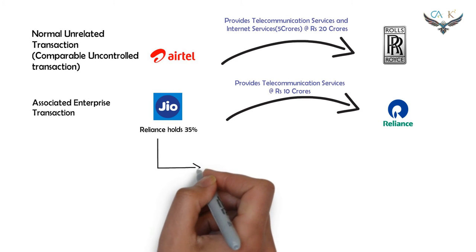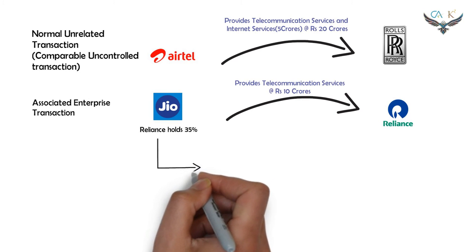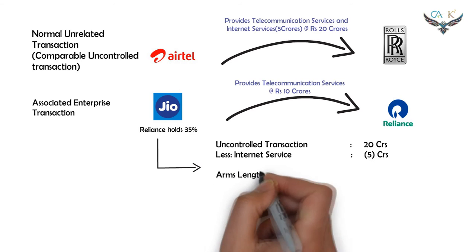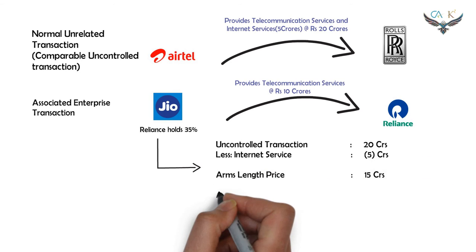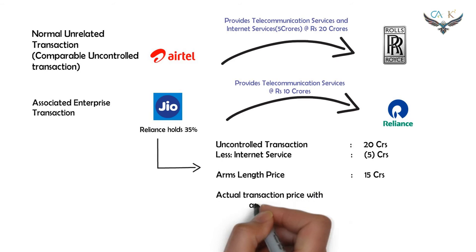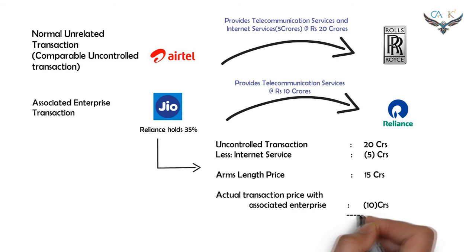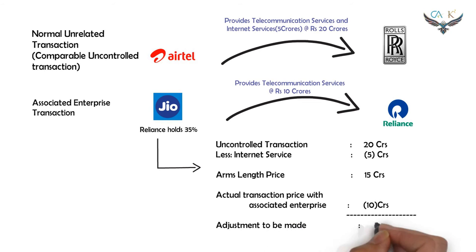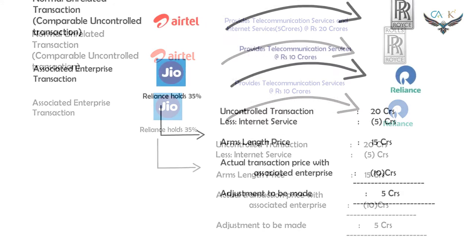In this scenario, the arm's length price is calculated from the perspective of Jio company as follows: take the uncontrolled transaction price of Rs. 20 crores and deduct the internet services component (since Jio does not provide internet services to Reliance), arriving at an arm's length price of Rs. 15 crores. From the arm's length price, deduct the actual transaction price of Rs. 10 crores — so the difference of Rs. 5 crores is required to be adjusted as a transfer pricing adjustment for income tax purposes.